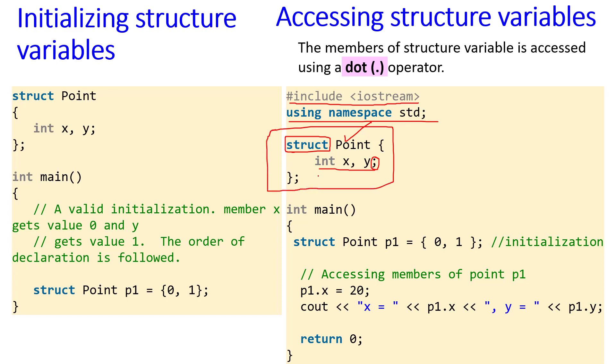After that, the integer main program: in int main, starting the curly braces, struct Point p1 = {0, 1}. We are initializing the value of x as 0 and y as 1. This is initialization of members of p1. To access and give a new value for x, you need to put p1.x. The p1 is the defined common variable. p1.x, this dot operator is for accessing. The members of structure variable are accessed using a dot operator. p1.x = 20 means the new value of x will be 20.